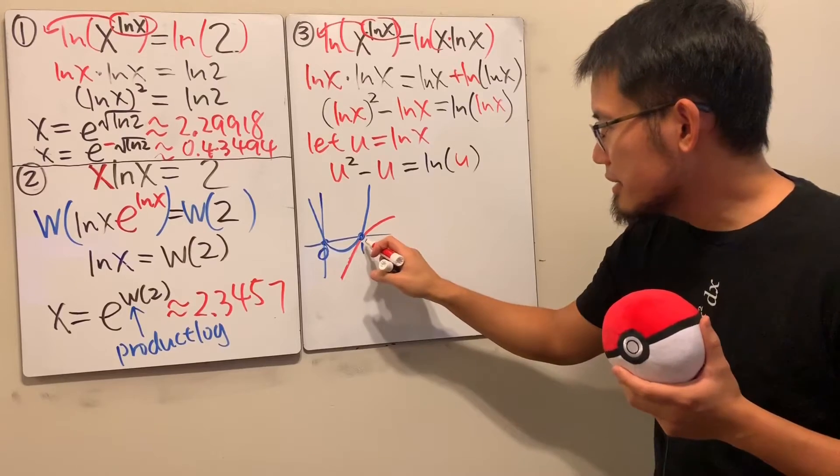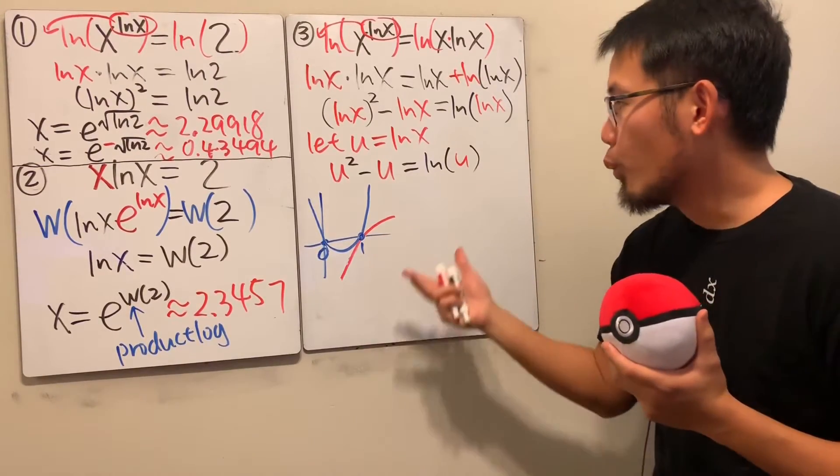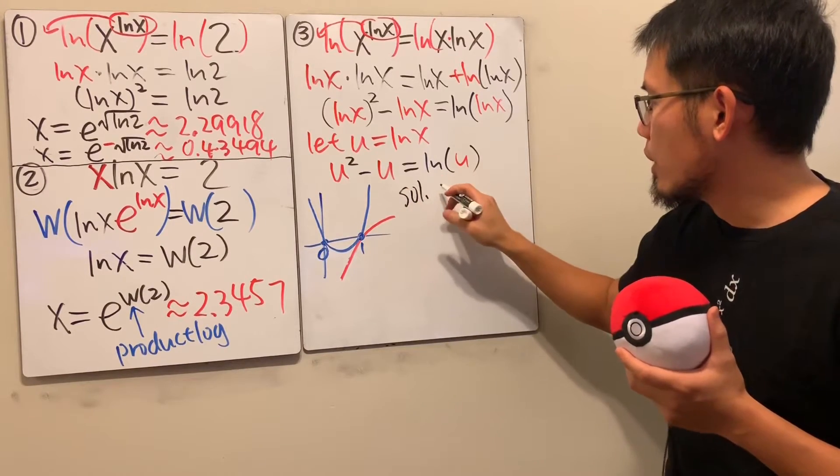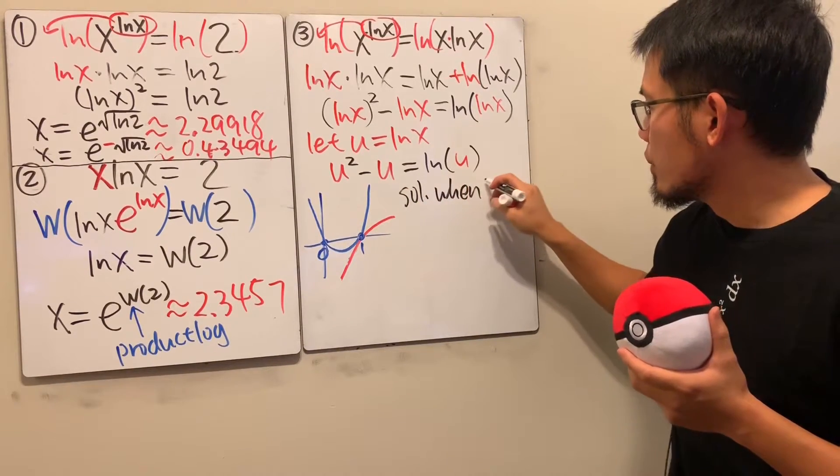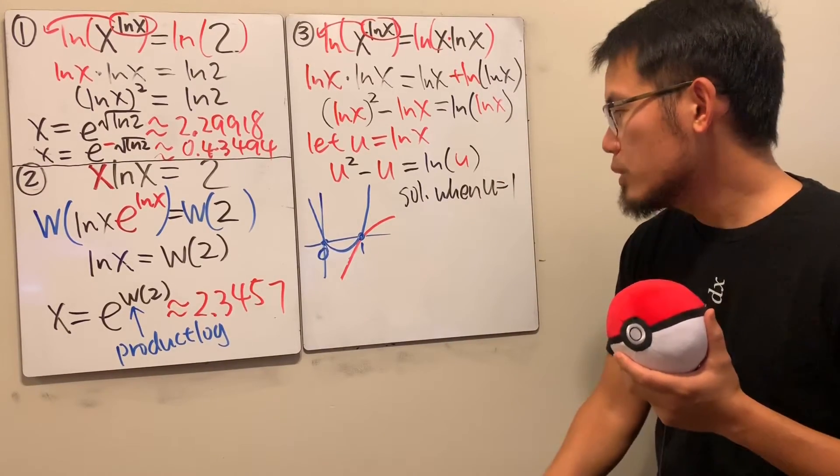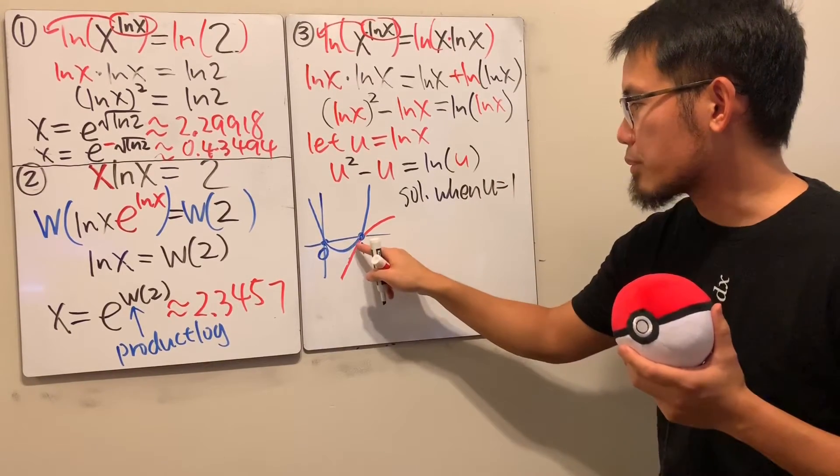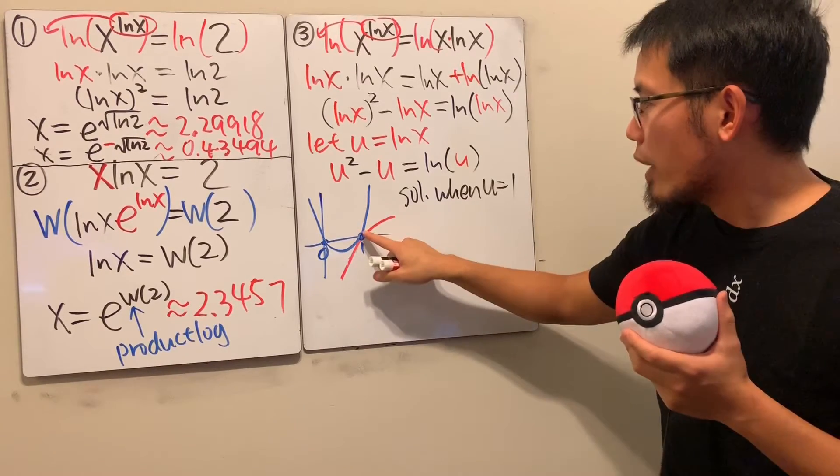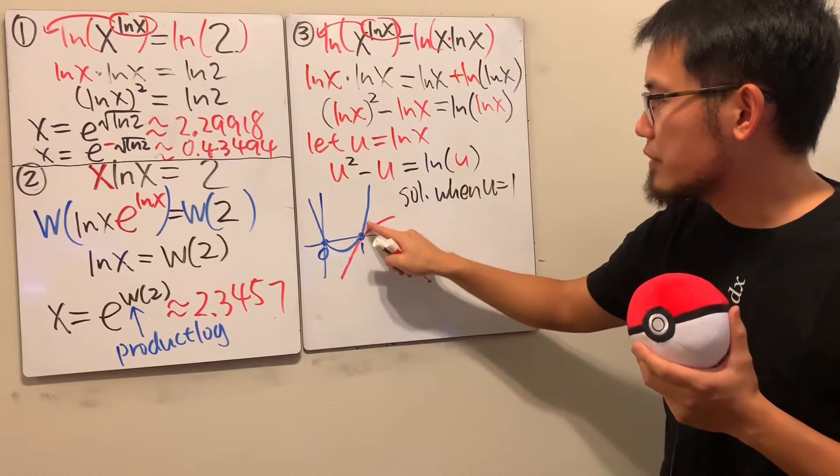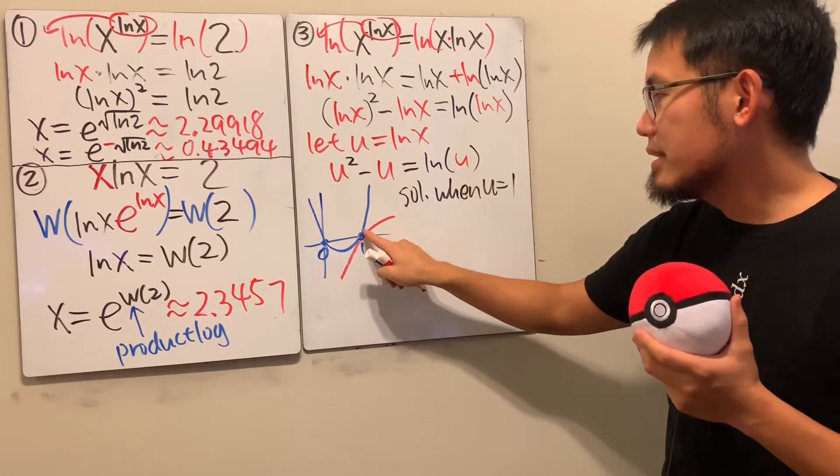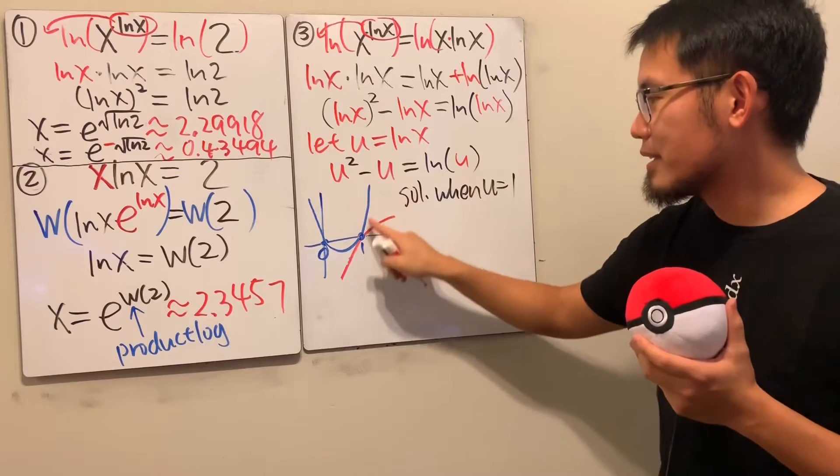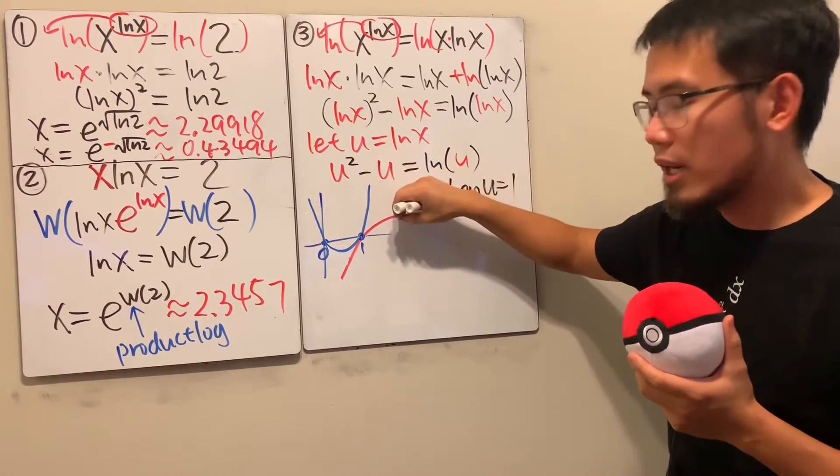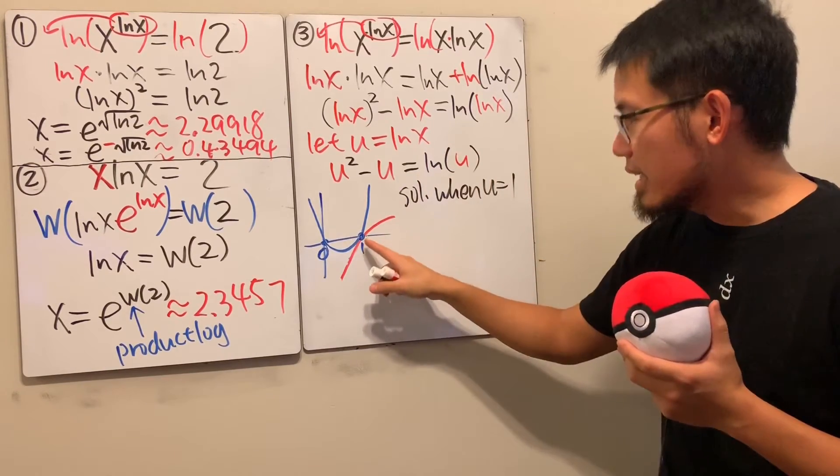You can clearly see right here, when u is equal to 1, we have a solution. So just say, solution when u is equal to 1. But how would you know that they don't intercept right here or right here? Well, first, when u is bigger than 1, you can see that the curve is actually going up. And then this right here will go up a lot faster than the natural log. So they will never cross each other anymore. All right. And secondly,